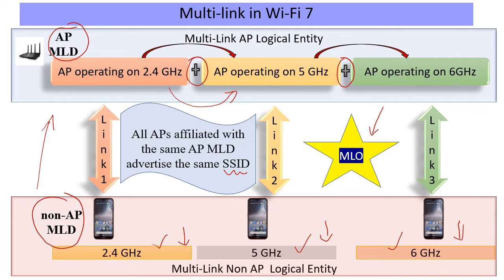The challenge now is: if we want to troubleshoot something in a multi-link scenario, how do we use sniffers — which we have relied on in previous generations — to look at various facets of the traffic or frames going back and forth between the AP MLD and non-AP MLD?